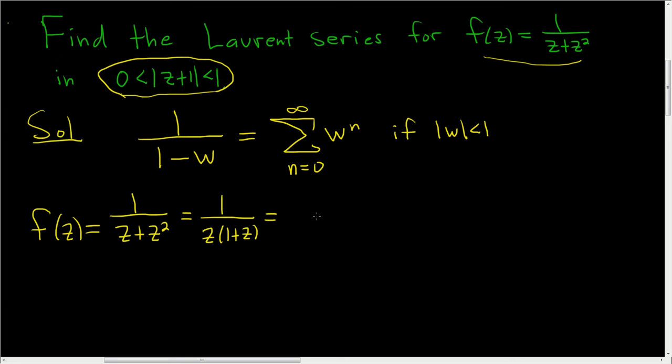Okay, we want this to be 1 over 1 minus z plus 1. That's what we want. So we went ahead and wrote down what we want. You see w is going to be z plus 1 for us. Now we actually have to fix this.